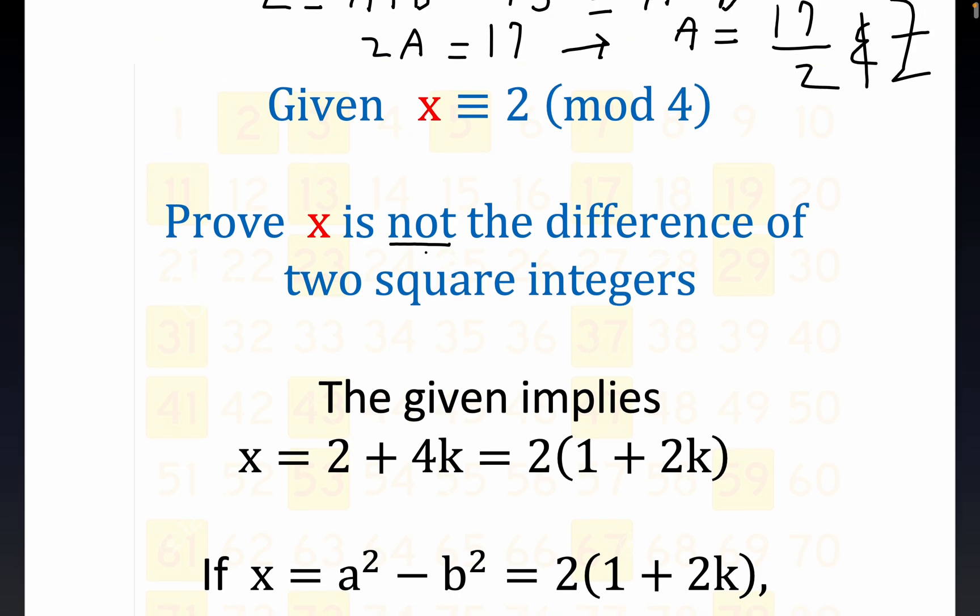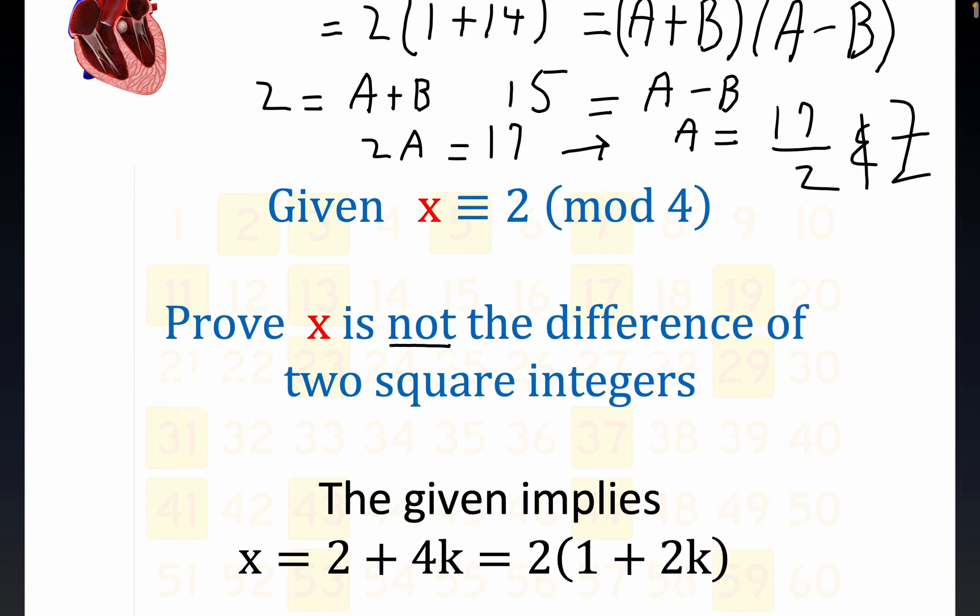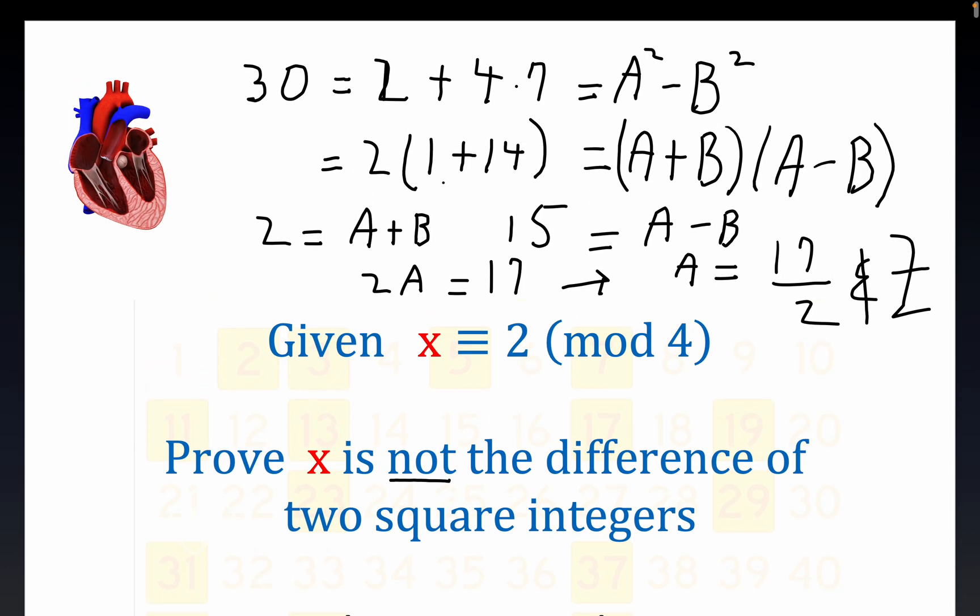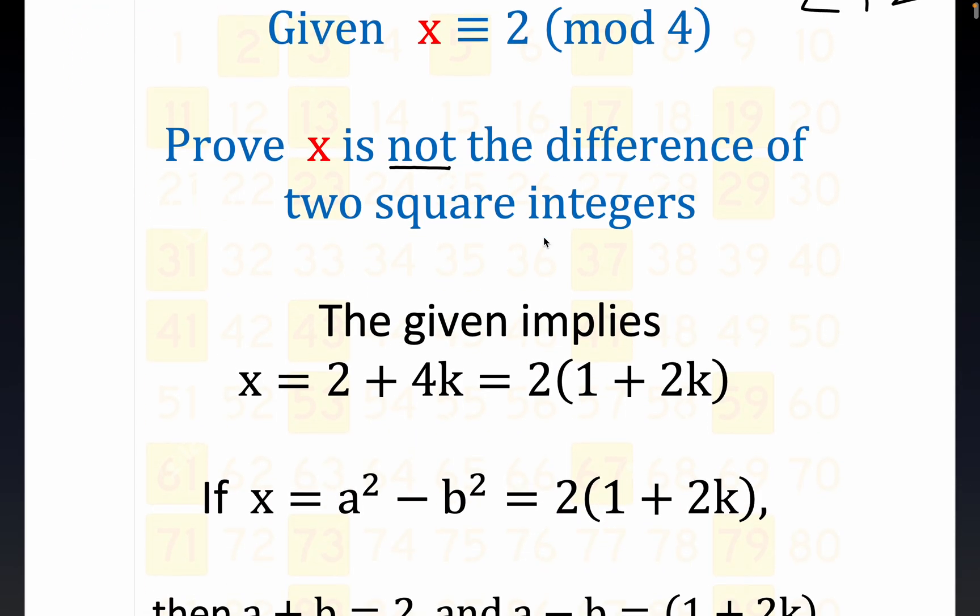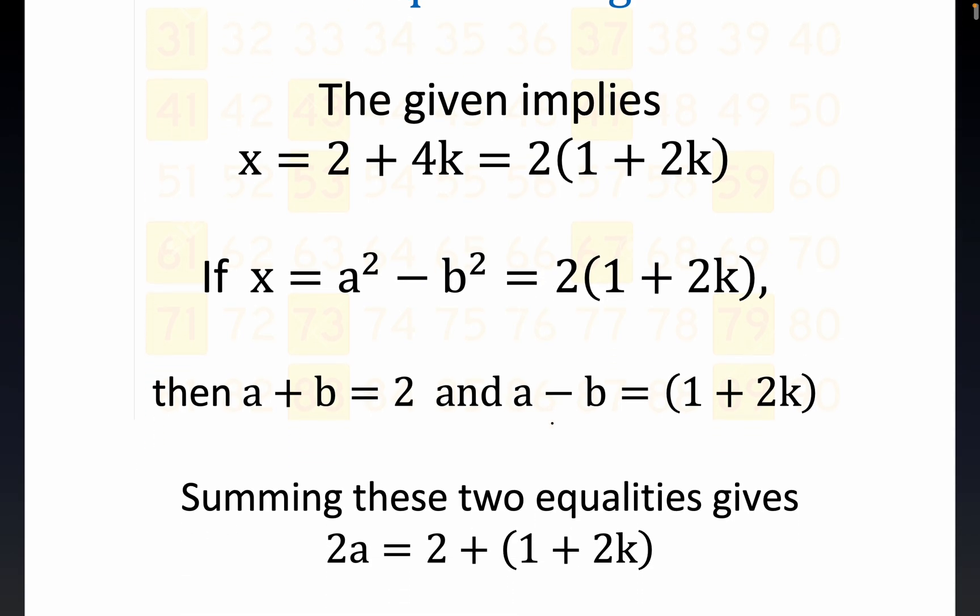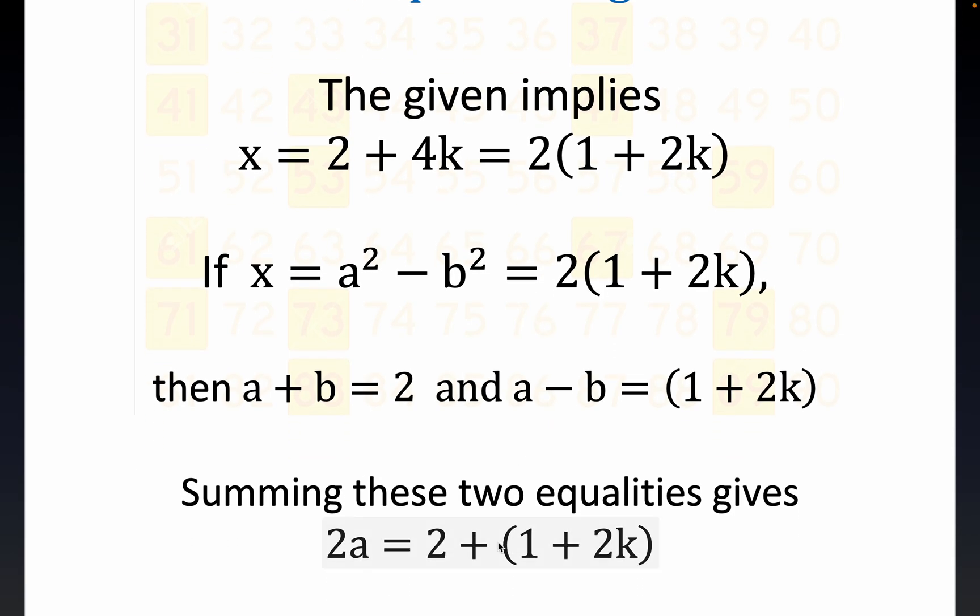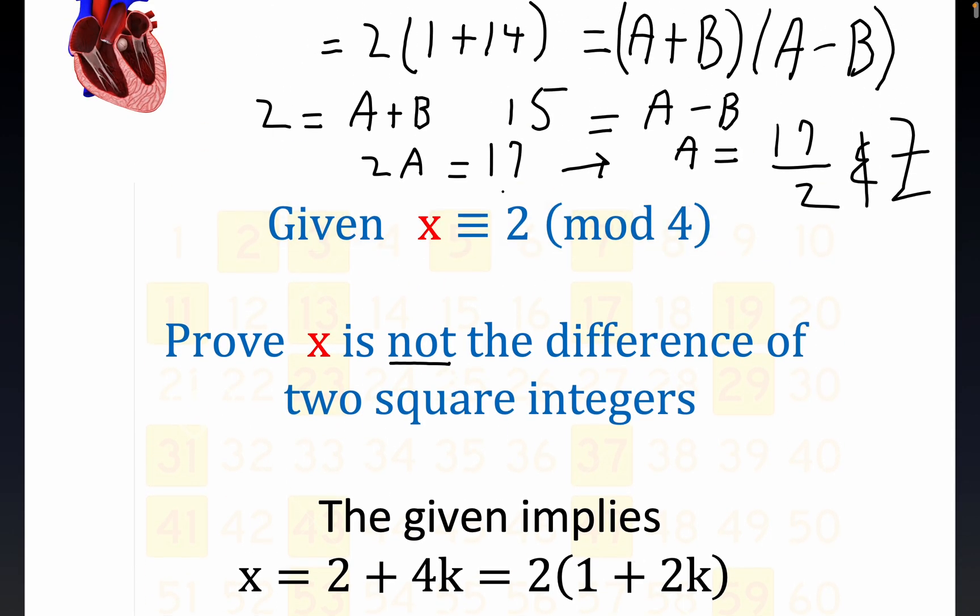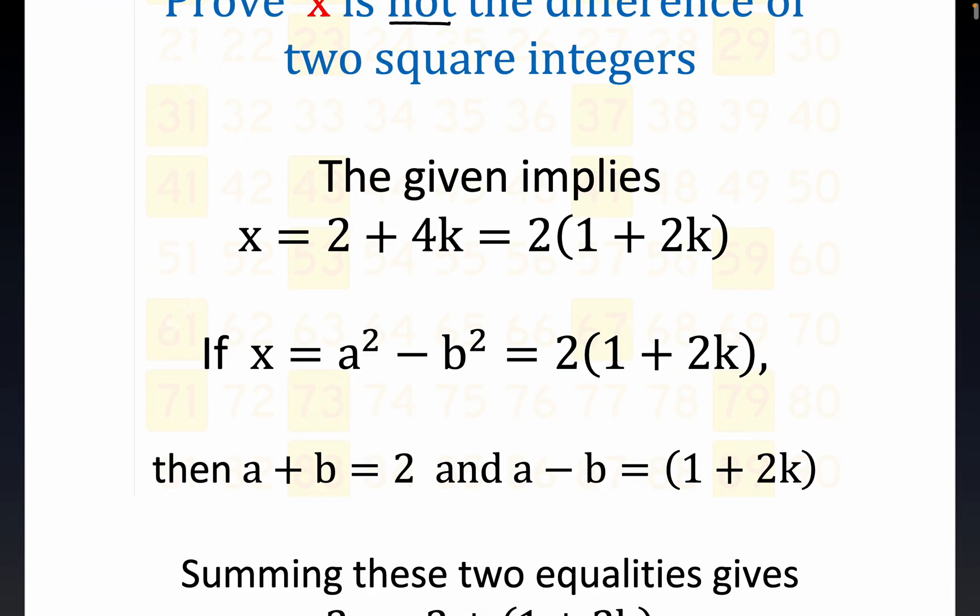Okay, again, the given is this right here, and this is in more general terms, where k is an integer, 2 plus 4k right here. Here our k turned out to be, what, 7? But now we're doing this in general, so the given implies this, and we carry on in a way that's very, very similar. We're just dealing with the letters now, and you end up with this exact statement right here. You get 2a is equal to 2 plus 1 plus 2k, which is exactly what this statement was right here, just with numbers.